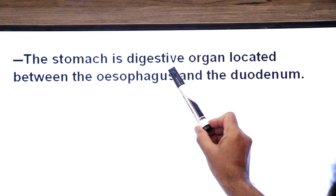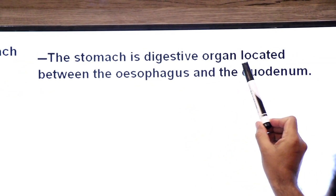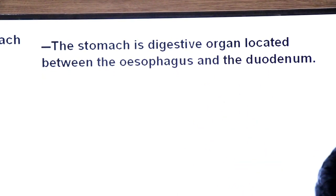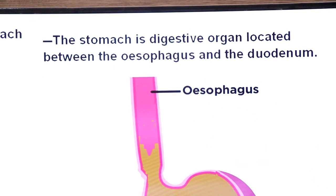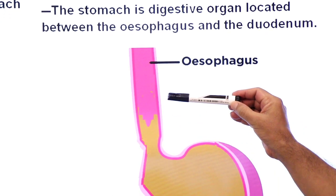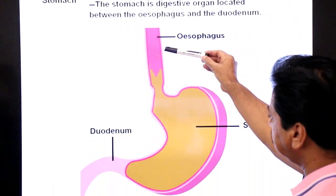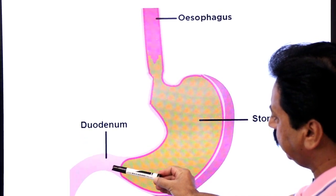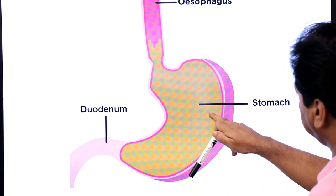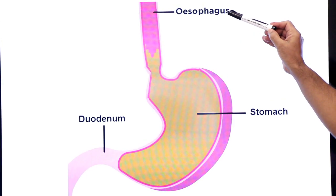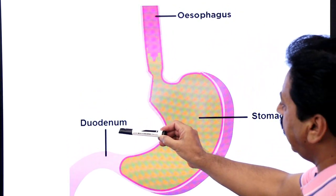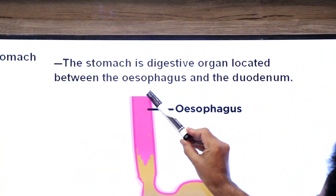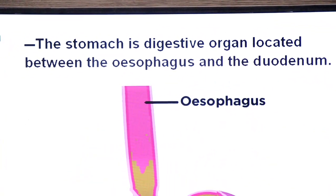The stomach is a digestive organ located between the esophagus and the duodenum. This is the esophagus and this is the first part of the small intestine known as duodenum. Here you see the stomach is located between them.